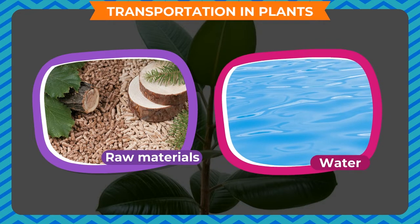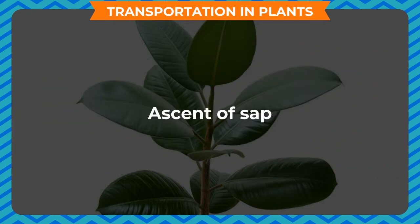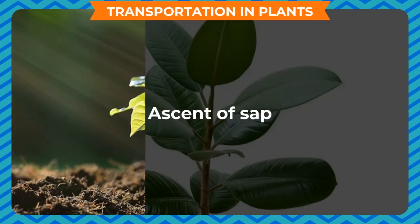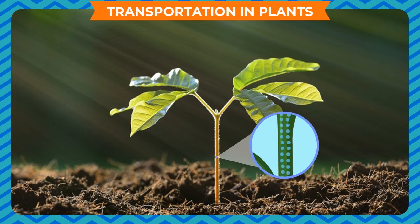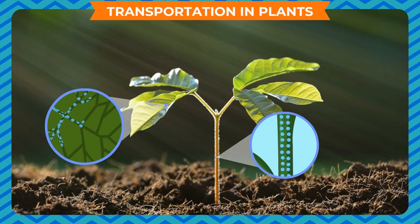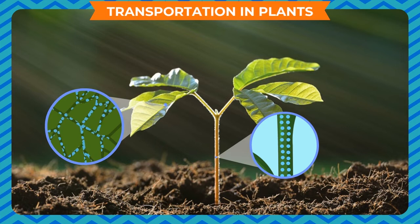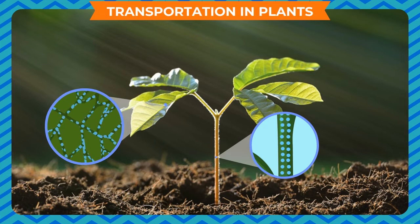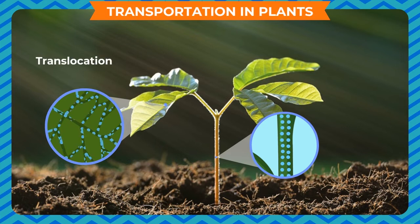This method is known as ascent of sap. When the food is manufactured, it has to be sent to all parts of the plant. This process is called translocation.